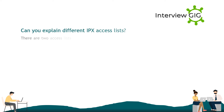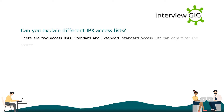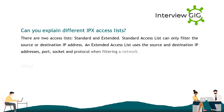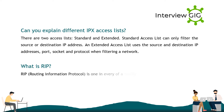Can you explain different IPX access lists? There are two access lists: standard and extended. A standard access list can only filter the source or destination IP address. An extended access list uses the source and destination IP addresses, port, socket, and protocol when filtering a network.